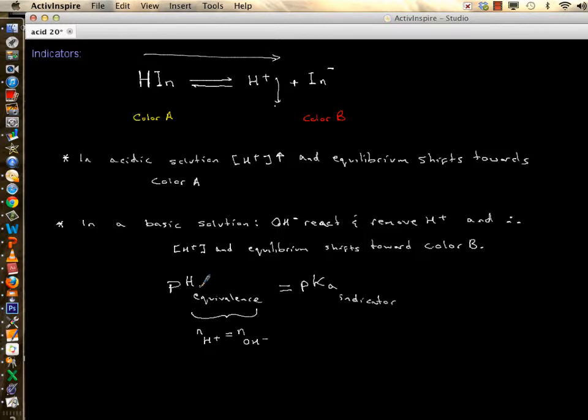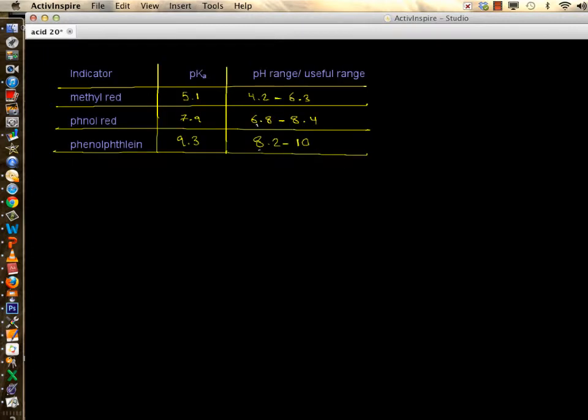Since indicators change color not at a specific pH but rather over a range, we usually give it a plus and minus one. Pick and choose an indicator that when you add one or subtract one from it, your equivalence point is covered. I have three indicators borrowed from IB data booklet: their pKa is given and their pH range or useful range is also given.